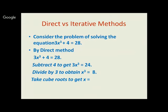Consider the problem of solving the equation 3x³ + 4 = 28. By direct method: take 4 to the right-hand side so 3x³ = 24, divide by 3 to get x³ = 8, then take the cube root to get x = 2 as the real solution. The three complex roots are 2, 2ω, and 2ω², where ω and ω² are the cube roots of unity. If we need only the real root, x = 2 is the solution.